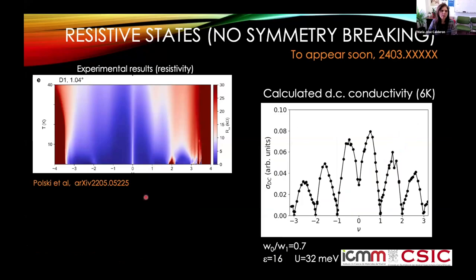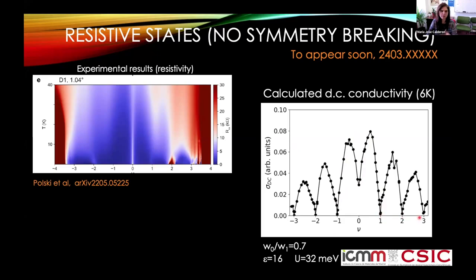Returning to the resistivity measurements showing resistive states surviving to high temperatures at integer fillings, we have calculated the DC conductivity, which shows a suppression of conductivity — equivalently an increase of resistivity — at integer fillings, similar to both the experimental result and to what we see in the density of states.